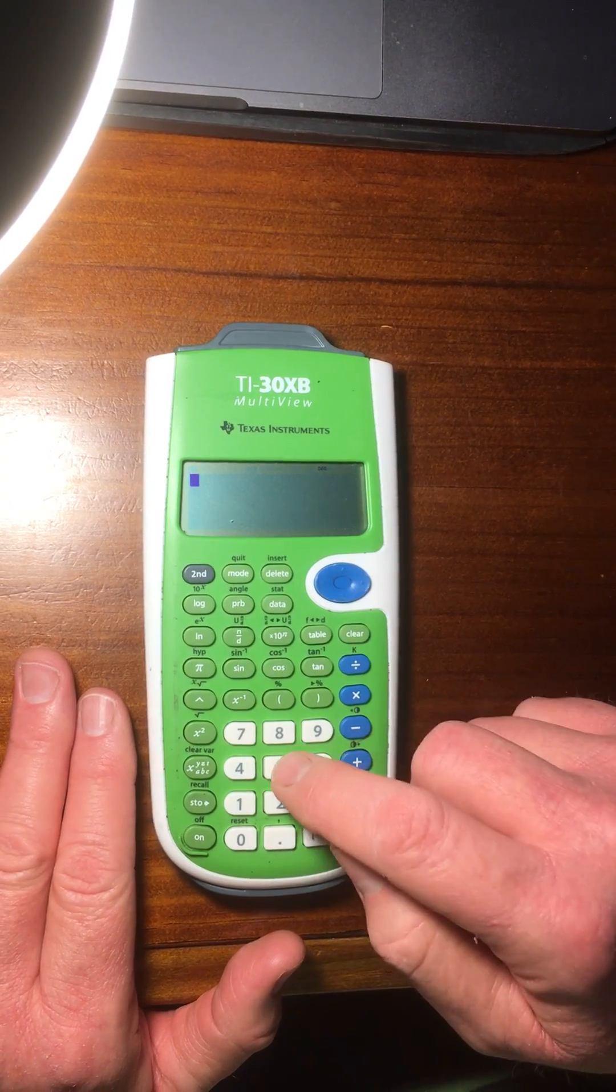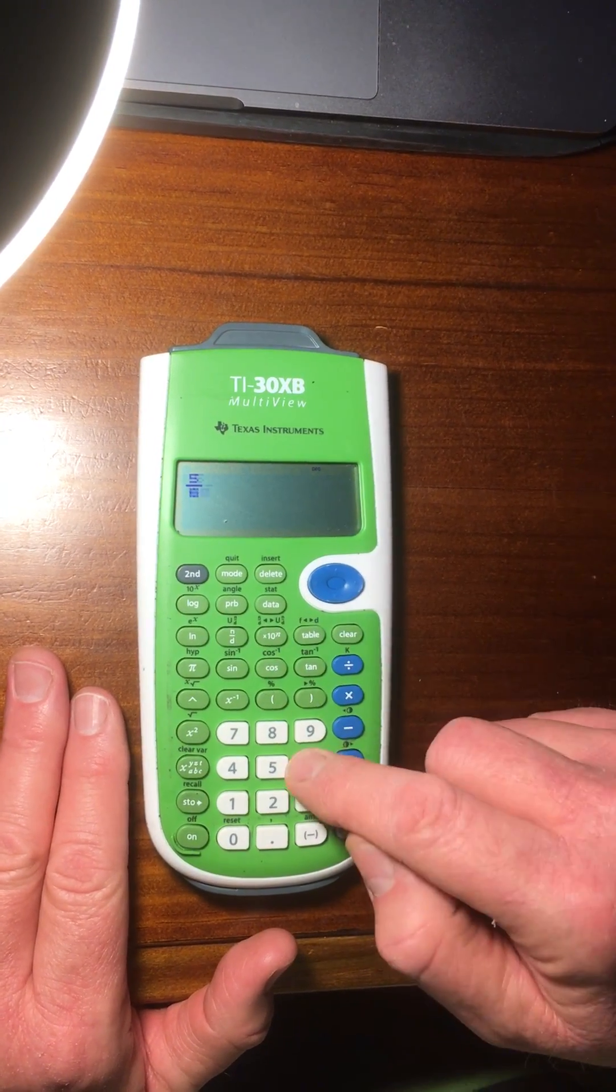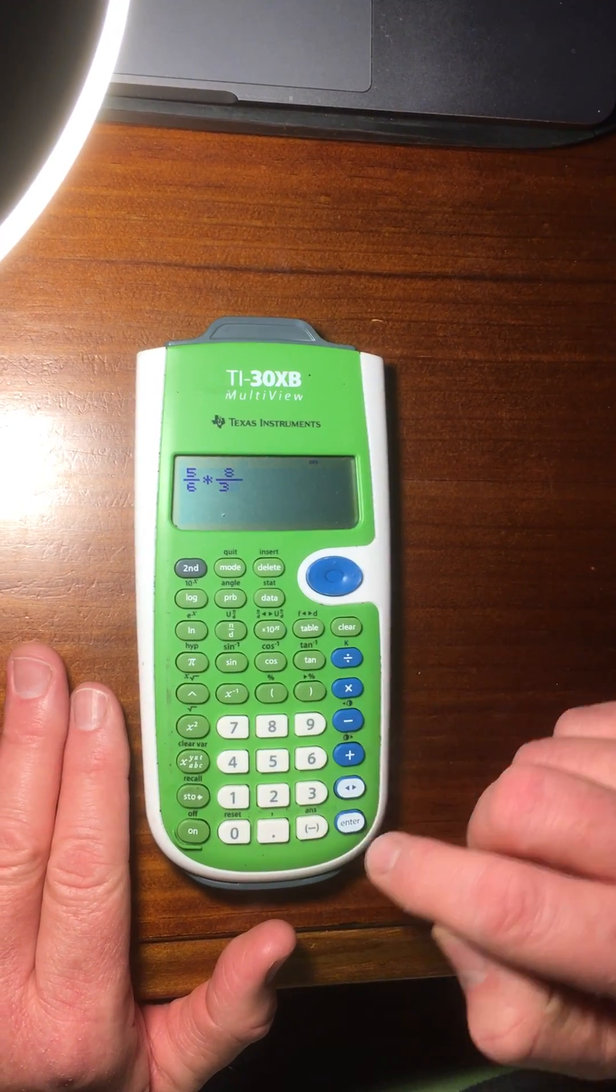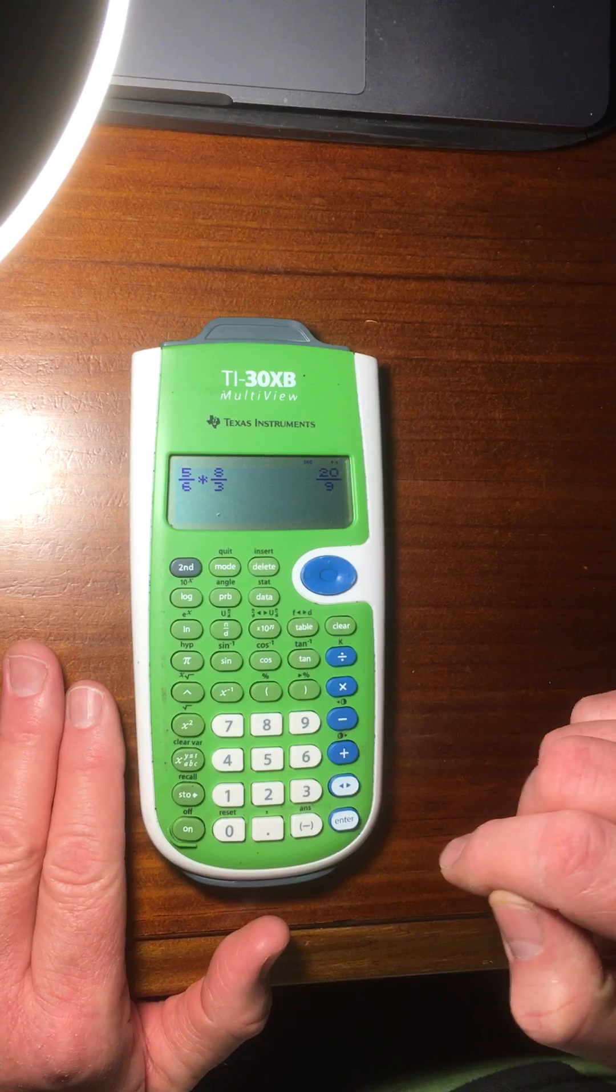So MathPrint, if we do the same calculation, 5 over 6, you see it looks like a fraction. And then we're going to multiply by 8 over 3. And we get the answer 20 over 9.